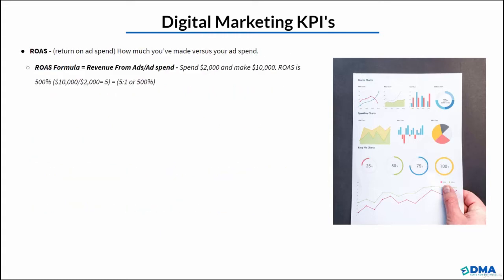Next is return on ad spend, or ROAS. This is essentially how much we've made versus how much we've spent on ads. The formula is revenue from ads divided by ad spend. For example, if we spend $2,000 and we make $10,000, the return on ad spend is 500%, or five to one.